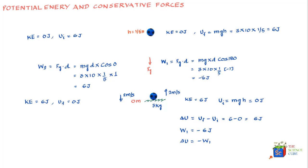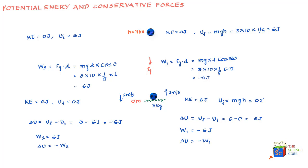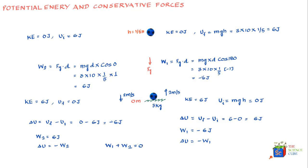The force of gravity does positive work on the way down, helping to increase the kinetic energy of the body. Again, ΔU = U_final − U_initial = 0 − 6 = −6 joules, and W2 = 6 joules, confirming that ΔU = −W2. Considering the entire journey — going up and then coming back down — W1 + W2 = −6 + 6 = 0, completing a closed loop.